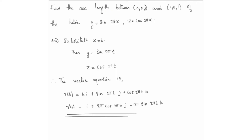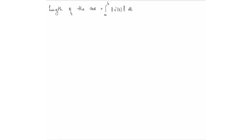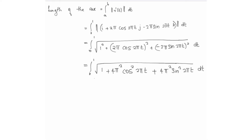Using the arc length formula L = integral from a to b of the norm of r'(t) dt, and t varies from 0 to 1, we get: integral from 0 to 1 of the square root of 1² + (2π·cos(2πt))² + (−2π·sin(2πt))² dt.